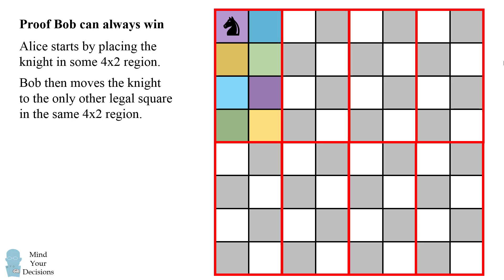Now the key is that Bob has taken the only other legal square in that 4x2 region. This forces Alice to move the knight to a new 4x2 region on her next move. She cannot stay within the same 4x2 region because these two squares have already been visited. So let's say Alice moves here.